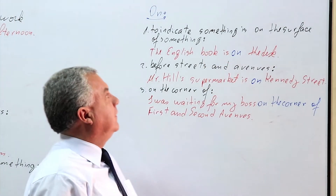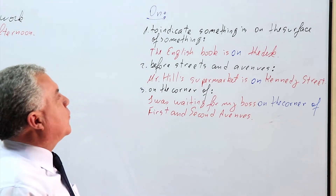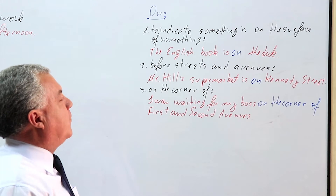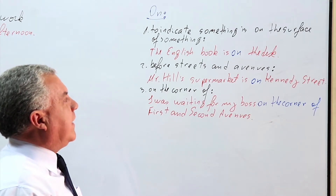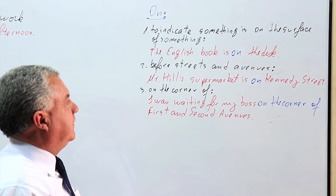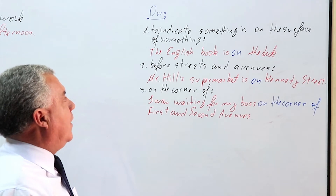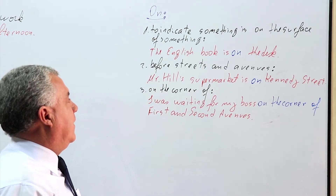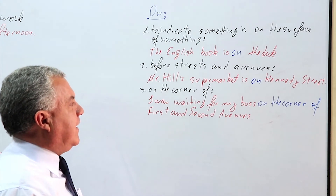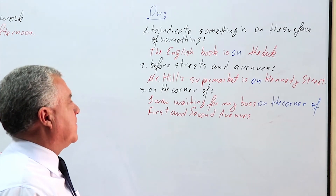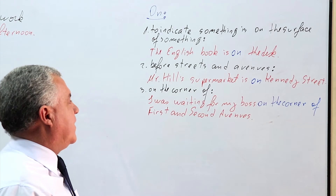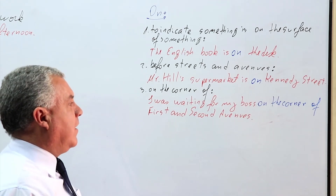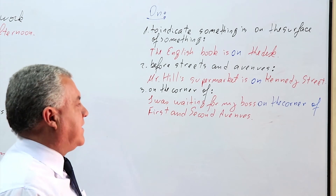Let's finish the video with 'on'. 'On' is used to indicate that something is on the surface of something — for instance, the English book is on the desk. Another use of 'on' is before street names and avenues — for example, Mr. Here's supermarket is on Kennedy Street. And finally, with the expression 'on the corner of' — for instance, I was waiting for my bus on the corner of First and Second Avenues.